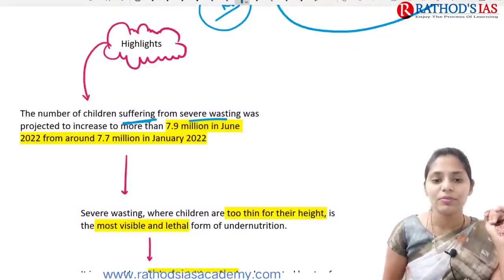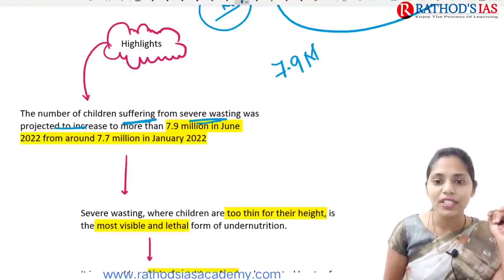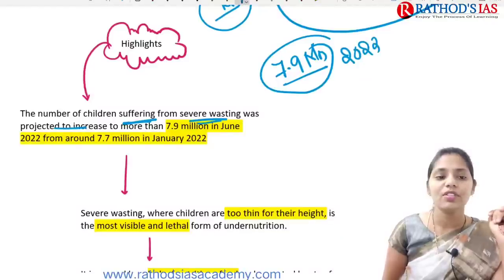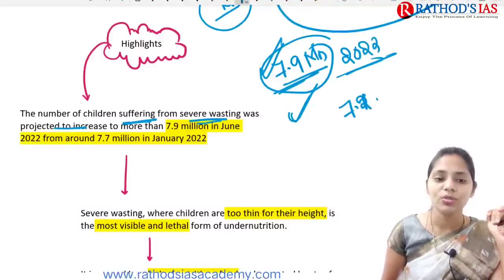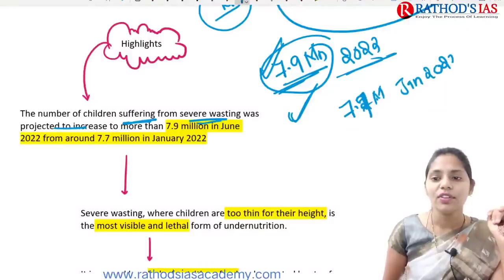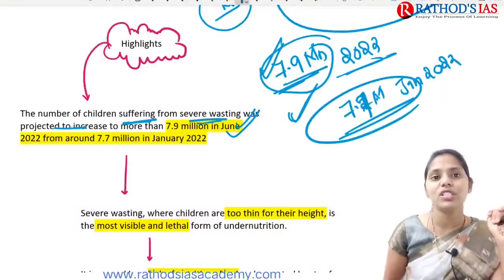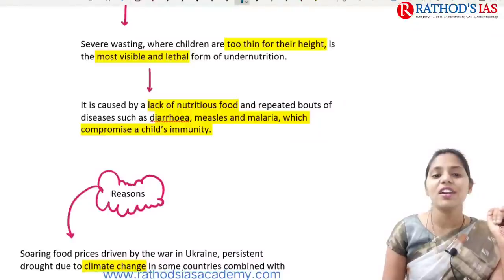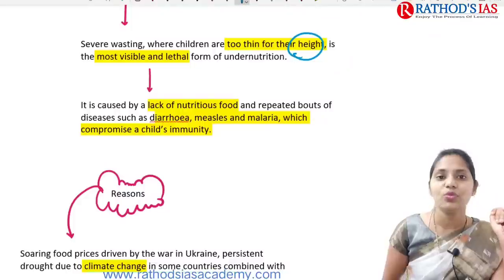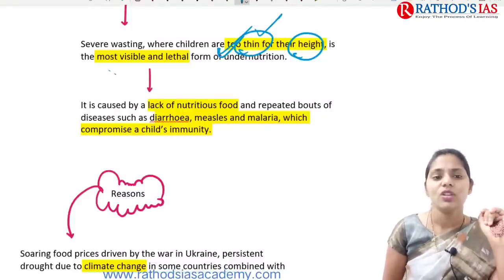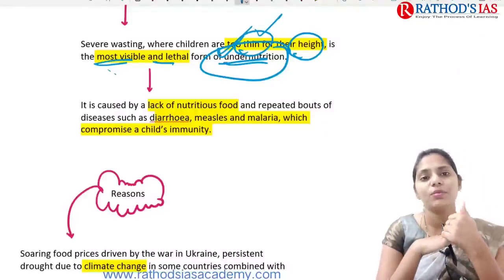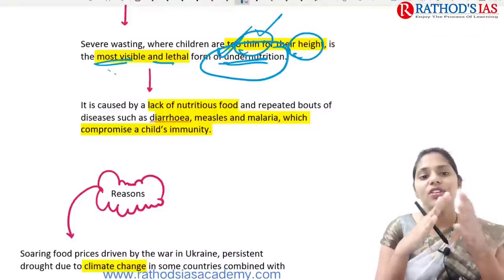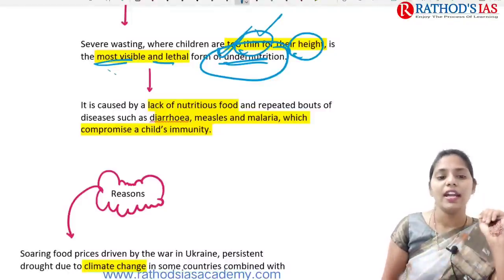The number of children suffering from severe wasting was projected to increase to more than 7.9 million in June 2022, up from 7.7 million in January 2022 — a drastic increase. Severe wasting means children are too thin for their height, the most visible and lethal form of undernutrition. Problems like wasting and stunting result from lack of proper nutrition.